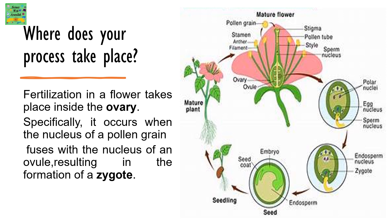Where does this process take place? Fertilization in a flower takes place inside the ovary. Specifically, it occurs when the nucleus of a pollen grain fuses with the nucleus of an ovule, resulting in the formation of a zygote.